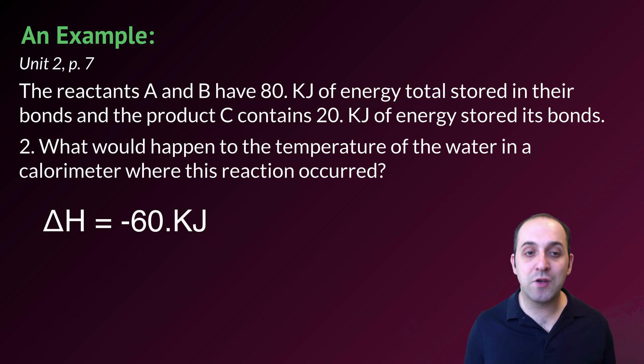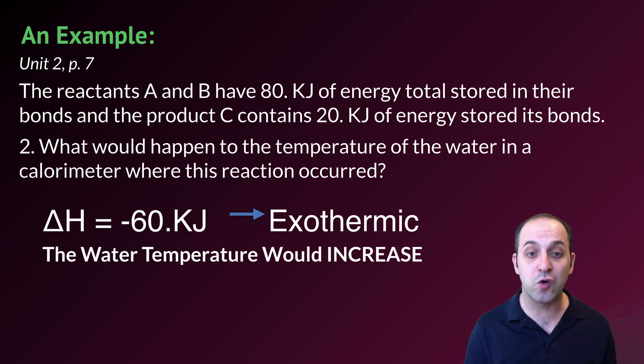In question two, what would happen to the temperature of the water in the calorimeter where this reaction occurred? Delta H is negative 60 kilojoules, which tells us that it's an exothermic process. Because it's an exothermic process, we know that we're going to release energy into our surroundings. The water of our calorimeter is part of our surroundings, and so they will absorb the energy that's released, and we would expect that the temperature of the water would increase as a result.